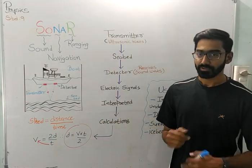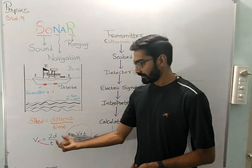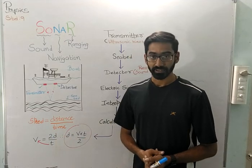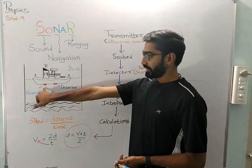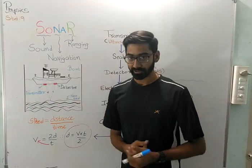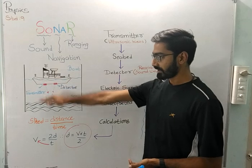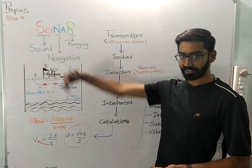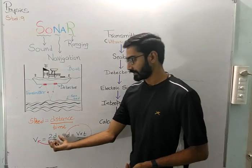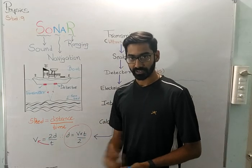Friends, now the question will arise, why is there 2D over here? Again you have to focus on the figure for this answer. The moment transmitter transmits the ultrasonic wave, it travels the depth two times, one incoming and then after reflecting. So that is why we are putting 2D over here.